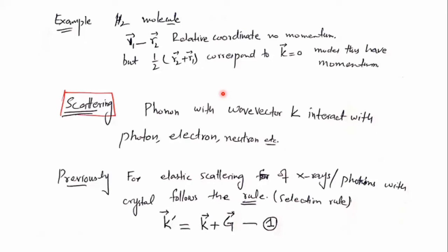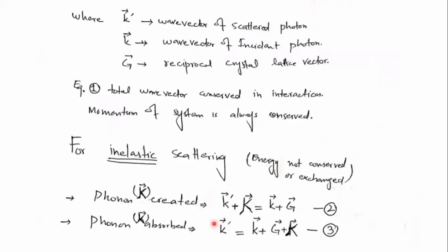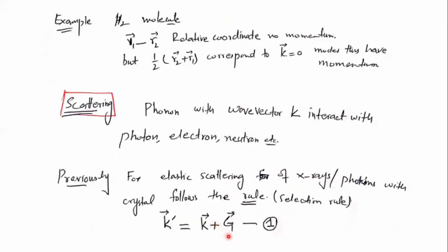Previously we studied in physical classes that if elastic scattering of X-rays or photons with crystals, which we have seen in the selection rules, in that case K' equals K plus G, where K' is the scattered photon wave vector, K is the incident, and G is the reciprocal lattice vector. We have seen this in the selection rule.